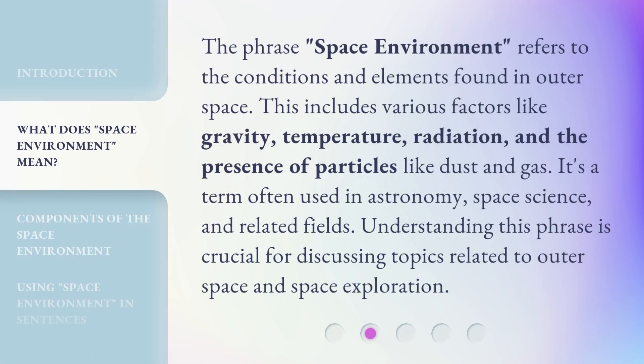The phrase 'space environment' refers to the conditions and elements found in outer space. This includes various factors like gravity, temperature, radiation, and the presence of particles like dust and gas. It's a term often used in astronomy, space science, and related fields. Understanding this phrase is crucial for discussing topics related to outer space and space exploration.